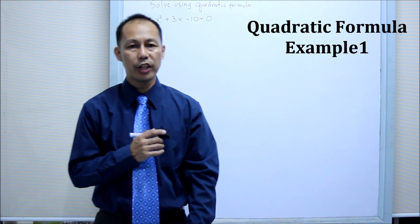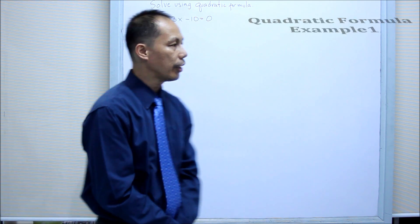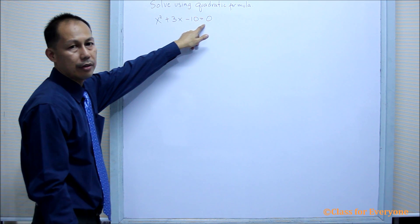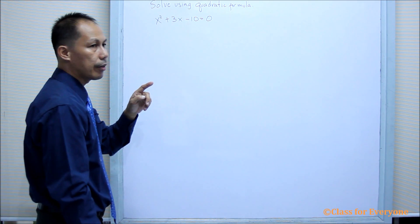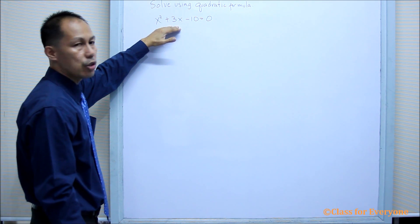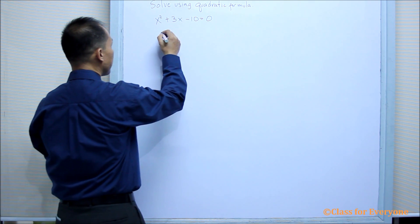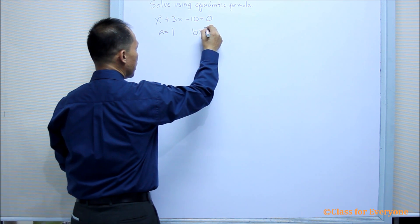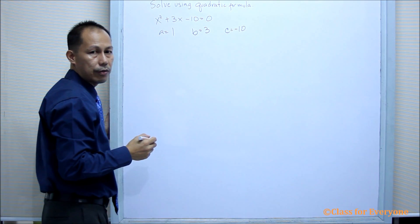We are going to use the quadratic formula to find the solution of the quadratic equation x squared plus 3x minus 10 equals 0. The first thing we have to consider is that the equation should be in standard form. It appears that the equation is already in standard form. So we can now identify the values: a equals 1, b equals 3, and c equals negative 10.